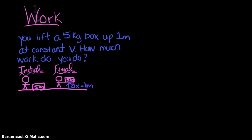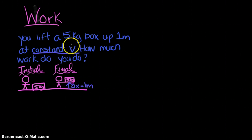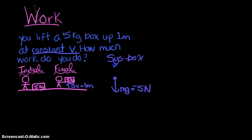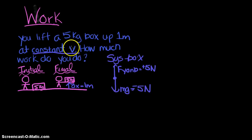Another example: you lift a 5 kg box up 1 meter at constant velocity — how much work do you do? Constant velocity is important for finding your force. The weight of the box is about 50 Newtons downward. At constant velocity the force you exert is exactly 50 Newtons upward. If it were accelerating upward your force would be greater; if slowing down while moving up, it would be less.